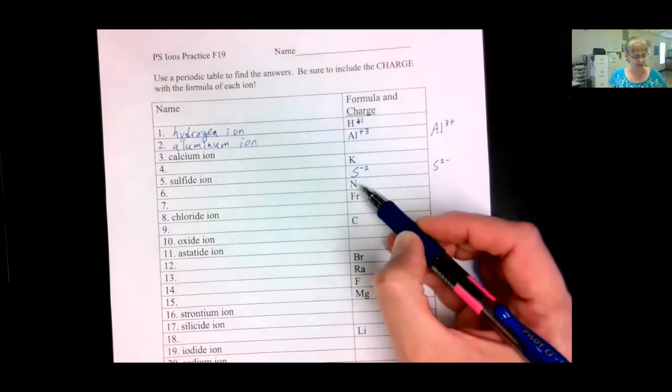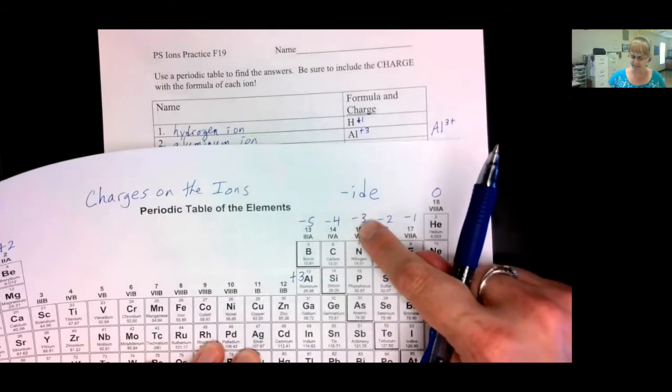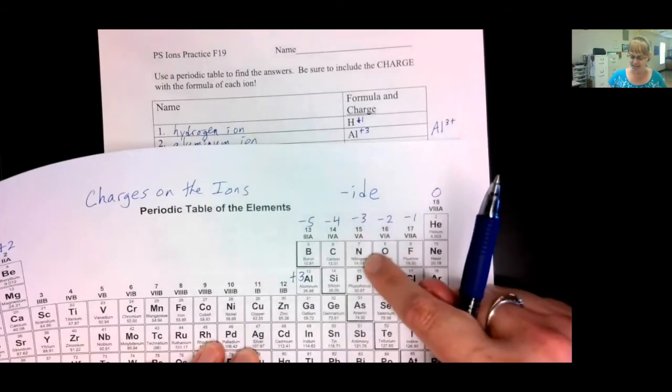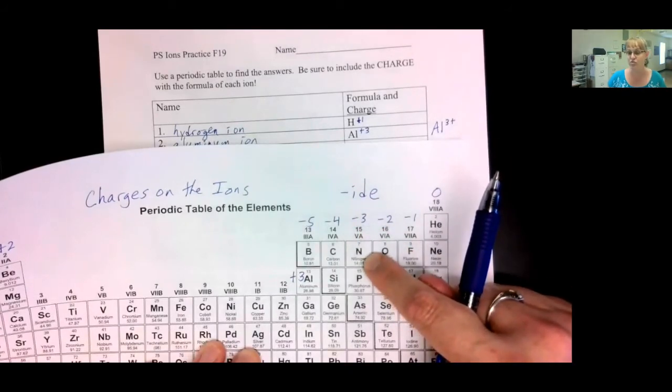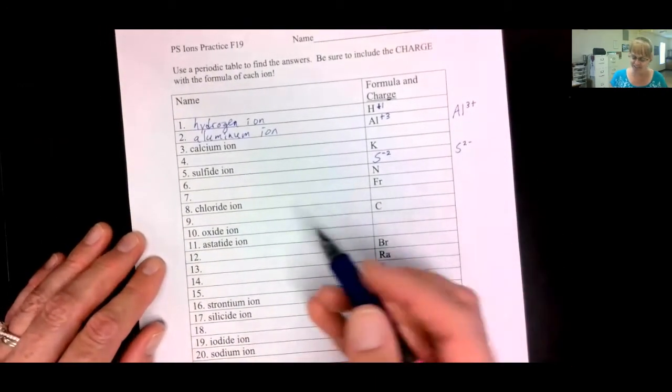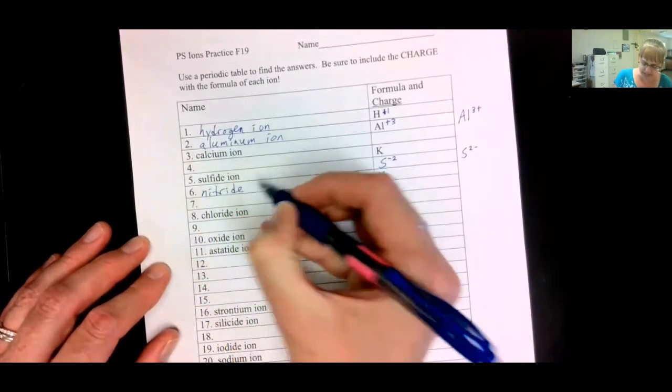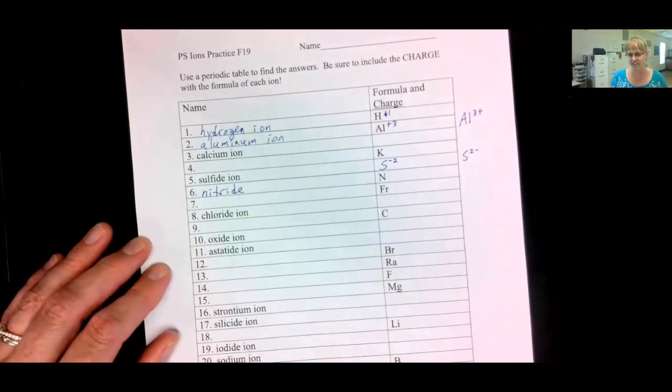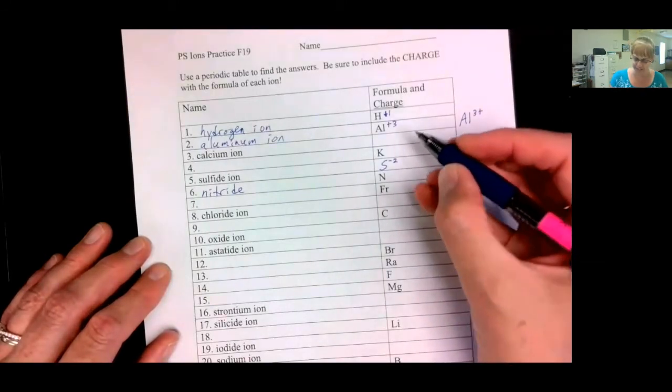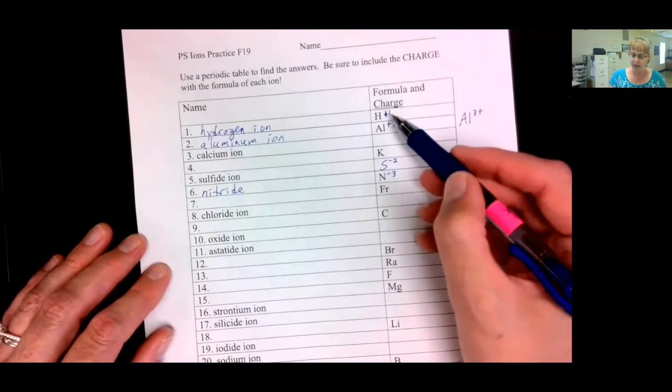When you find N on the periodic table. Here's N with a negative three charge. Nitrogen becomes nitride. Be careful. It's easy to forget that the negatives all have to end in ide. So, the nitride ion. We're just going to leave off the word ion. We'll assume that it's there. And, of course, it has a negative three charge.